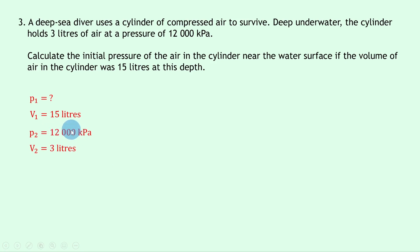So notice the final pressure P2 has units of kilopascals. So that means my initial pressure P1 will also have units of kilopascals. So writing down the equation for Boyle's Law, we have P1 V1 equals P2 V2. Substituting in the numbers gives us P1 times 15 is equal to 12,000 times 3. Now doing the right hand side and dividing by 15 gives us P1 on its own. And if you put that into your calculator, we end up with P1 equals 2400 kilopascals.